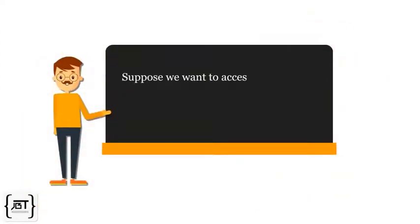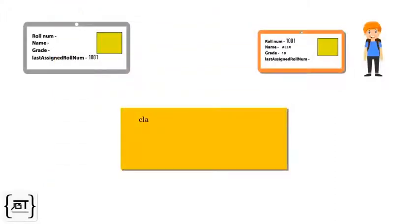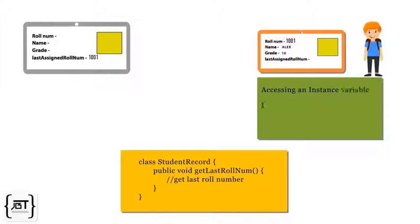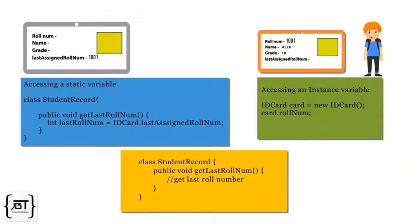Now suppose we want to access the value of last assigned role number from outside the class. For example, a class student record wants to check the value of the last assigned role number. We access instance variables using an object reference variable. Since a static variable does not belong to an object, we do not need an object reference variable to access its value. A static variable is accessed directly from the class.